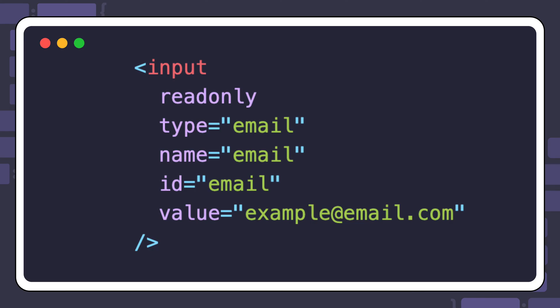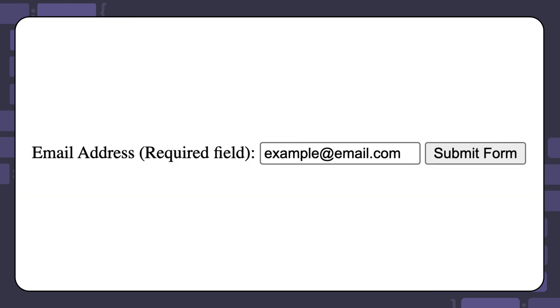Another type of form state is the read-only state. This is when a form control, like an input, is not editable by the user. Here is an example of setting an email input to read-only. The value attribute is used to set the value shown inside the input field, like this.